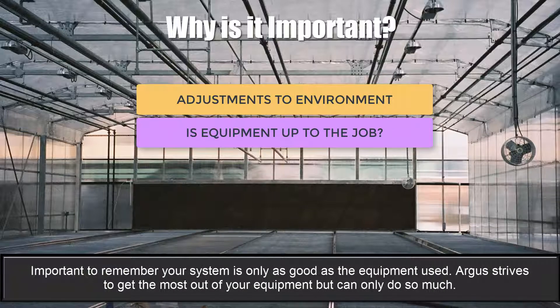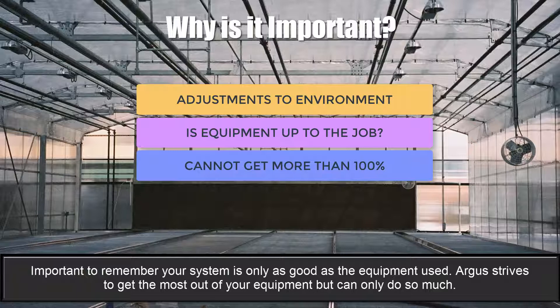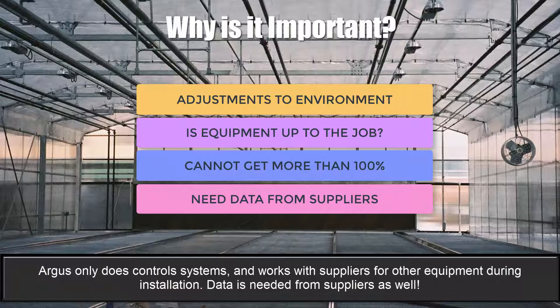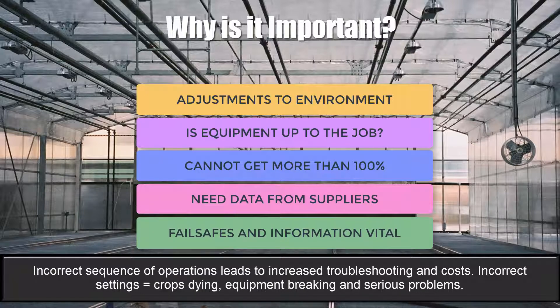It's very important to remember that your system is only as good as the equipment that's used. Argus staff strive to get the maximum out of your equipment but can only get to a certain point with the equipment already in place or bought. For example, if a dehumidifier is operating at 100% in a greenhouse and the humidity is not lowering to the set point, then it's not possible for Argus to make further adjustments. Keep in mind that each piece of equipment has a limit and usually cannot be extended beyond that limit. Argus usually only deals with control systems and works with various suppliers for the other equipment. Argus not only needs data from customers but also from the equipment suppliers.